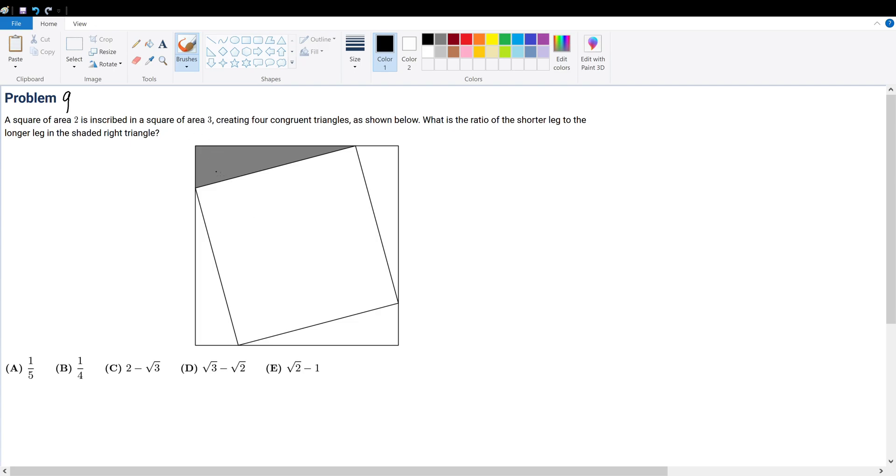So they're all right triangles. Now, what do we know about the area of a square? The area of the square, given its side length, is x squared equals its area. In this case, the inner square has an area of 2. Therefore, x squared equals 2, so x equals root 2. In other words, this side length is root 2. They're all congruent, so they're all root 2.